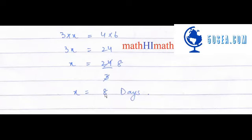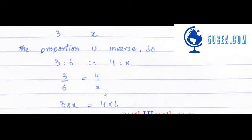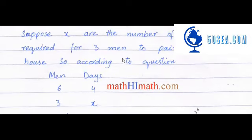اور x is equal to eight آ جائے گا. اب یہاں پہ ایک چیز جو یاد رکھنے والی ہے کہ یہاں پہ basically یہ ایک inverse proportion تھا. Inverse proportion اس لیے تھا کیونکہ men کم ہو رہے ہیں.